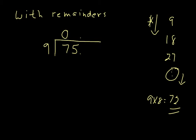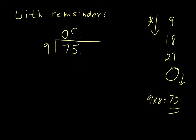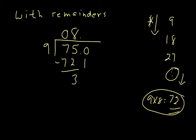So I know that the closest I can get to 75 is 72. I'm going to write 72 here and write eight up here. That means we're going to have a remainder, so we'll have to continue beyond the decimal. It's very important that you remember to put the decimal after the whole numbers, otherwise your answer will be wrong. We subtract 72 — I got the 72 from over here — so 75 subtract 72 is three.